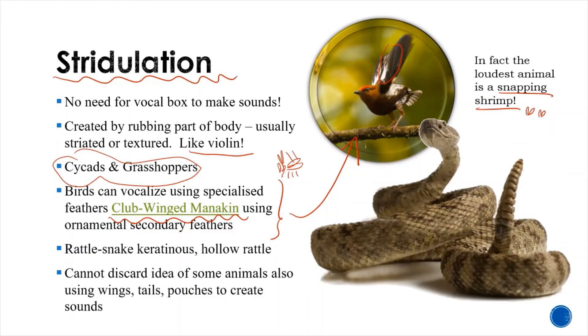The most famous example is the rattlesnake, who uses its keratinous hollow rattle to create warning sounds. We come to a disregarded idea of some extinct animals, like dinosaurs, using wings, tails, pouches, and such to create sounds.